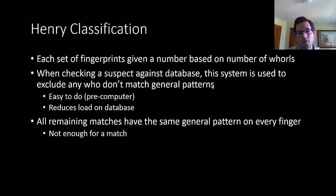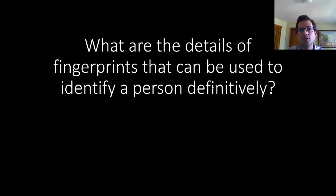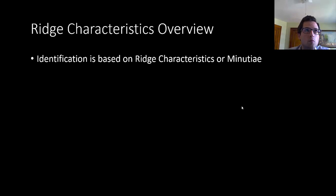Now this is not enough for a match. This is absolutely not enough for a match, but it is enough to exclude a number of possibilities. In order to have a match, we have to look at the ridge characteristics. What are the details of fingerprints that can be used to identify a person definitively? The final identification of a person is based on the ridge characteristics, which we can also call minutiae.